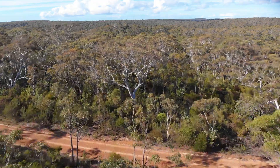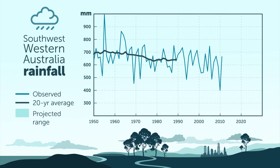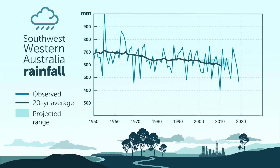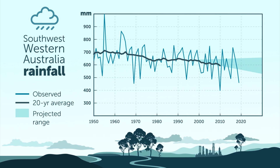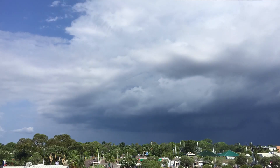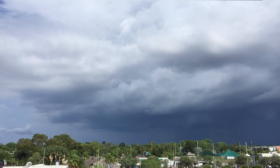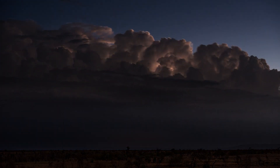We can identify these changes from Australia's historical climate data. Importantly, we also see similar changes in climate models that include increased atmospheric greenhouse gas concentrations. In fact, these models have long simulated the rainfall declines that we've seen in southern Australia over recent decades. The simulations, which are based on the physics of the oceans and the atmosphere, allow us to understand the past and project the future.